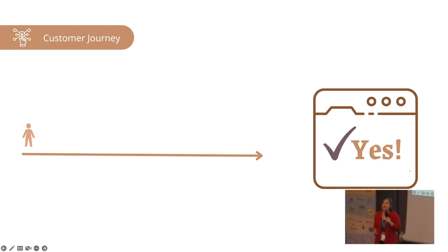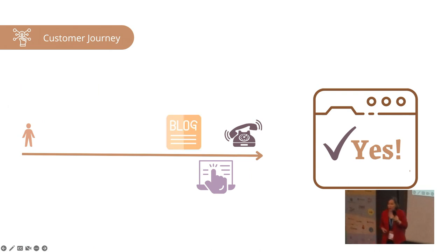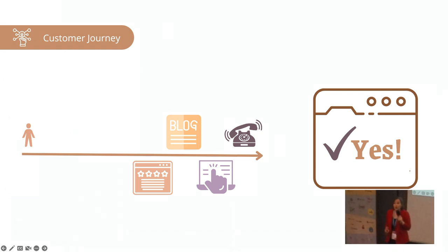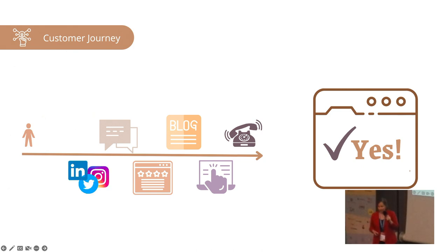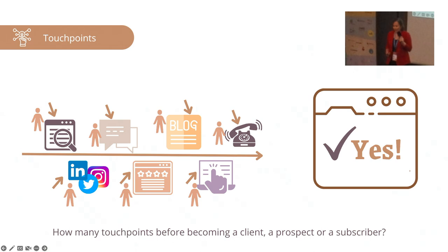Let's look at a customer journey — but backwards. You have a new client. What happened before they said yes? Do you get on a call with them? That call was probably booked on your website. But before that, they wanted to know more about you, so they read one of your blog posts. And before that, they checked your reviews on Google Business Profile. They had already heard from you in a group, and they had already seen your social media a couple of times. The very first time they found out about you, they were searching on the web.